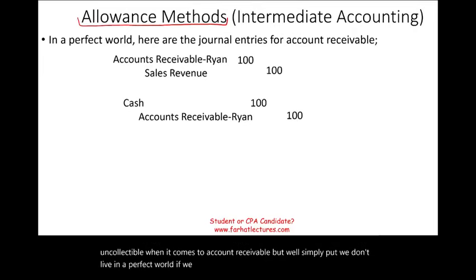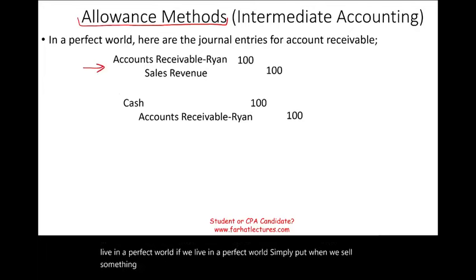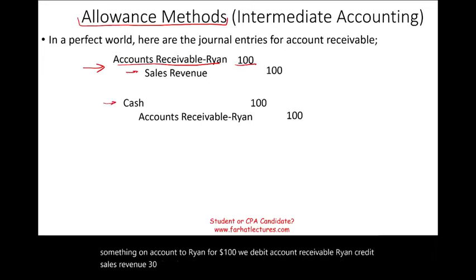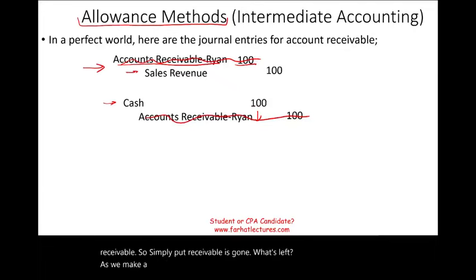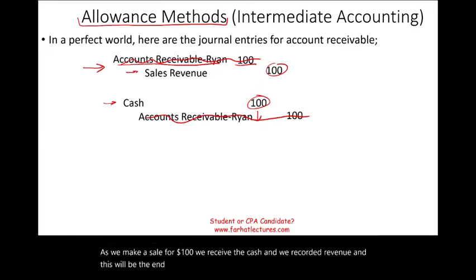If we lived in a perfect world, when we sell something on account to Ryan for $100, we debit account receivable Ryan, credit sales revenue. 30 days later, Ryan will pay his bill, we'll debit cash, credit the receivable. So the receivable is gone. What's left is we make a sale for $100, we receive the cash, and we recorded the revenue. And this would be the end of the chapter that deals with account receivable.